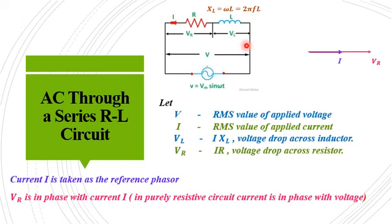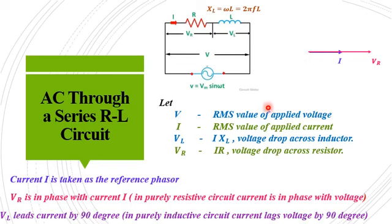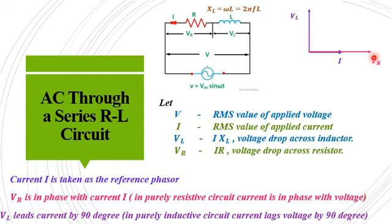Next is the voltage across the inductor. We have already derived that for a purely inductive circuit the voltage leads the current by 90 degrees. So VL will lead the current by 90 degrees, and a leading parameter is always drawn upwards. So VL is drawn 90 degrees upward. We have now drawn the current phasor, the Vr phasor, and the VL phasor. The total supply voltage V is the vector sum of Vr and VL.